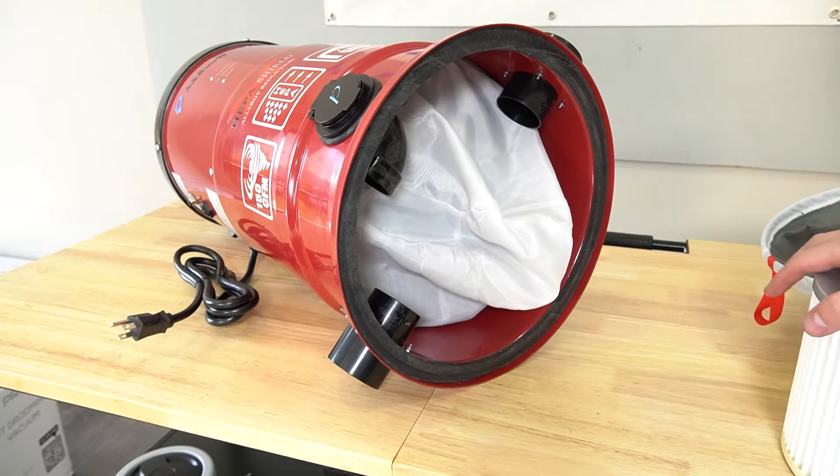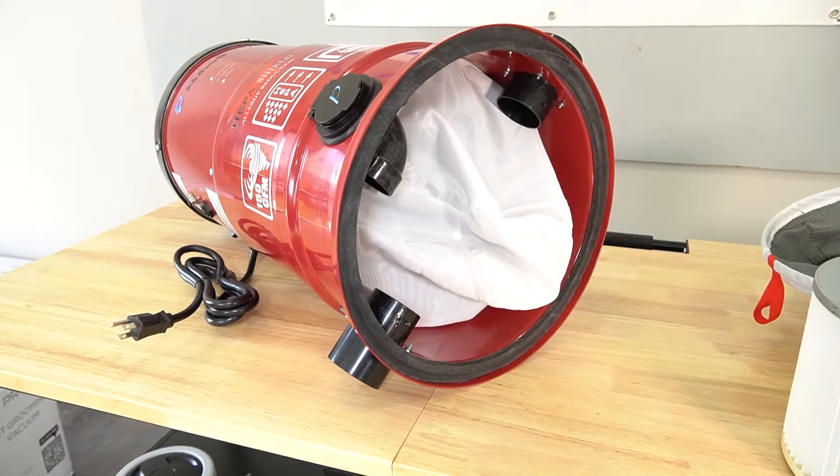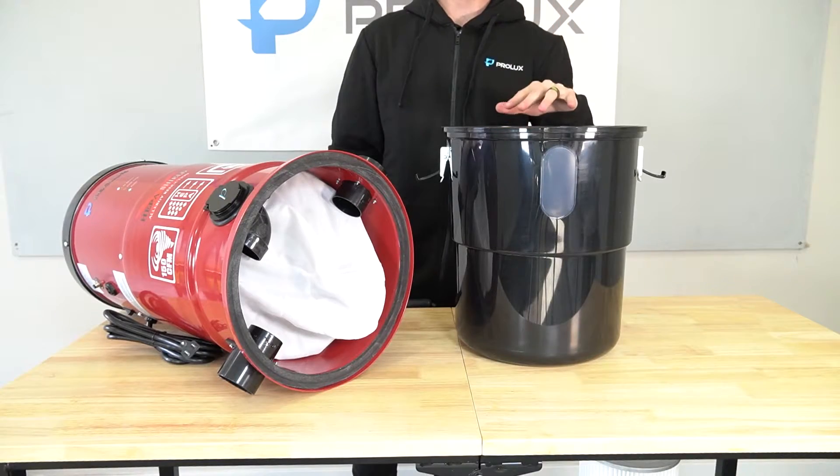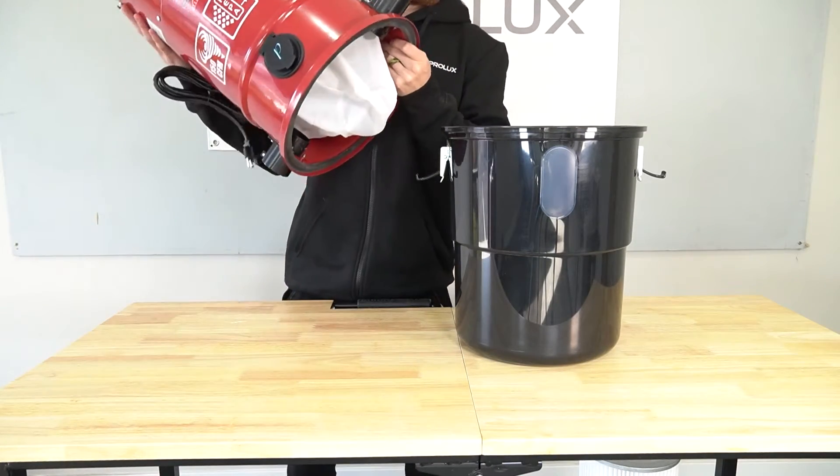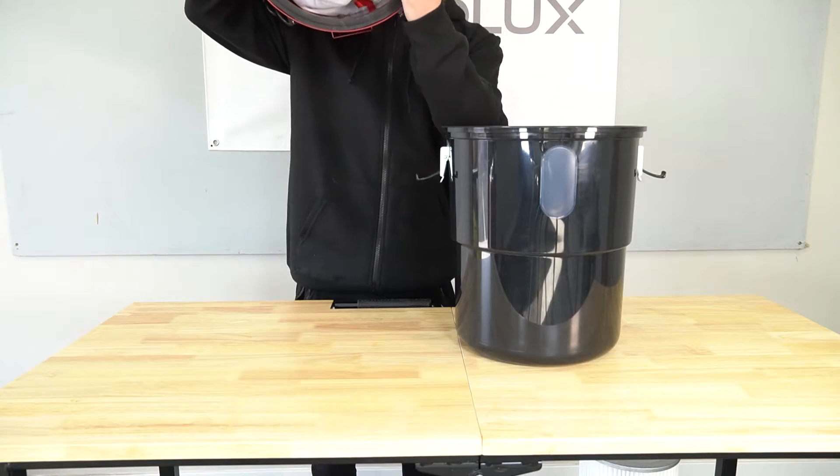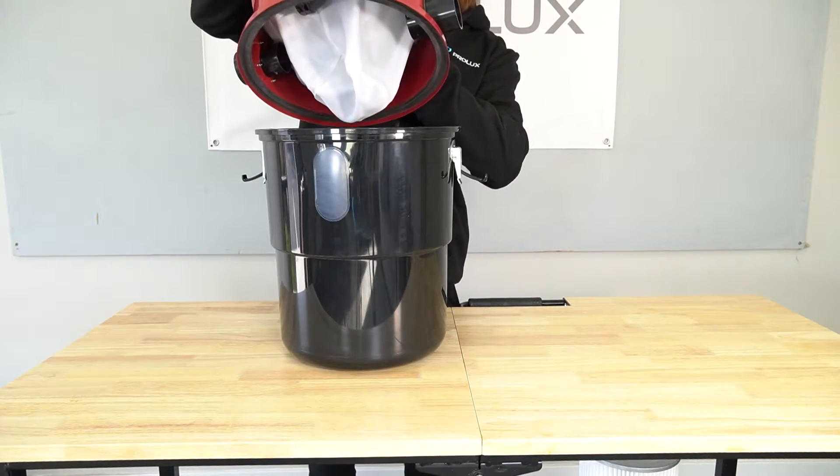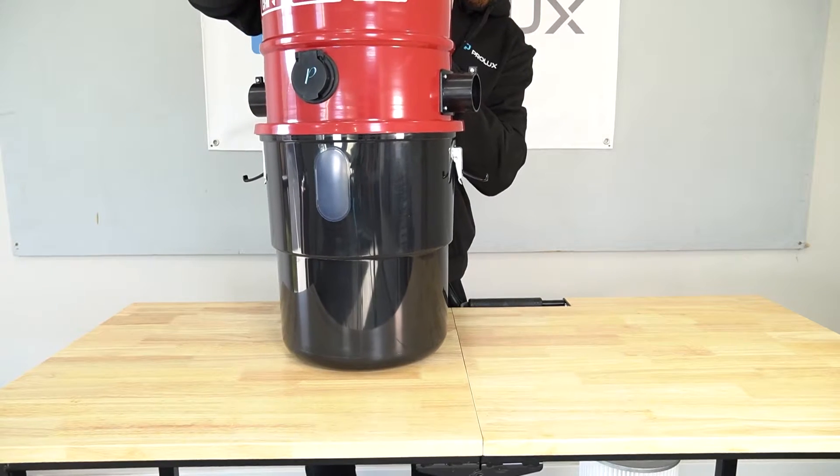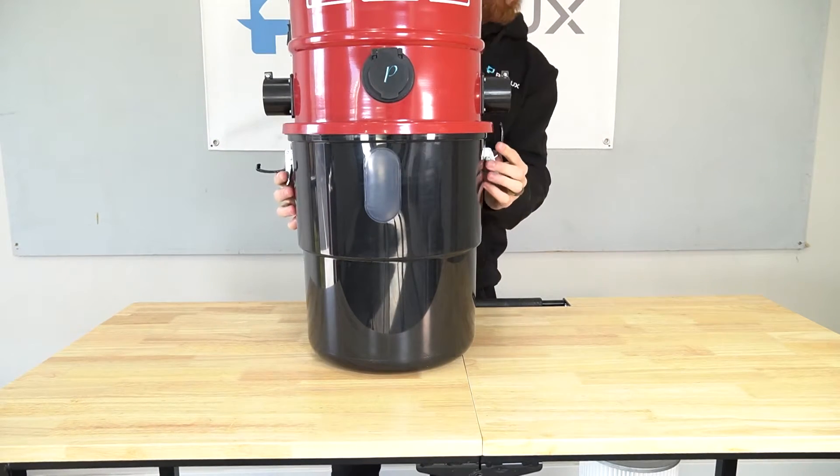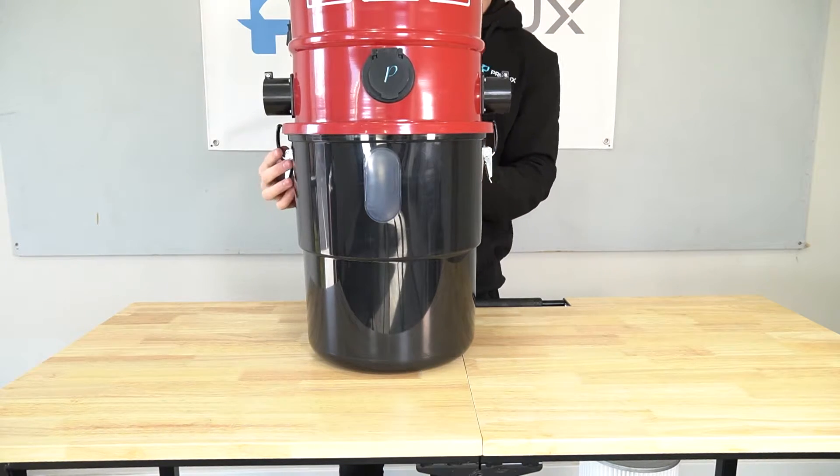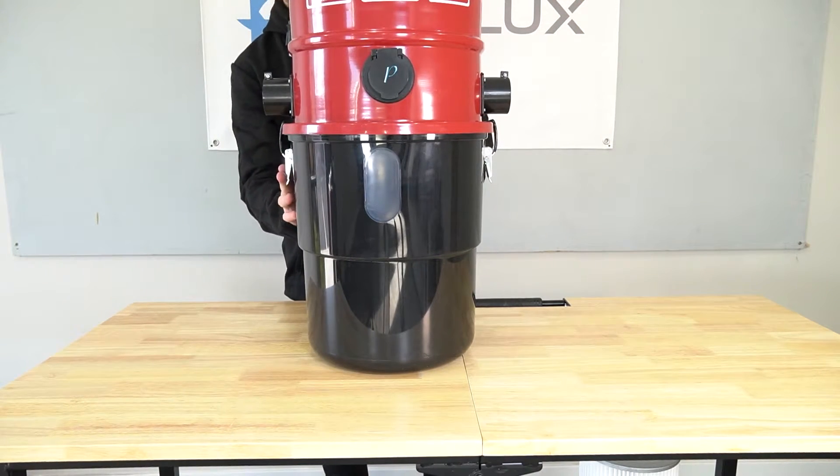Once you have both filters replaced, reattach it to the dirt bin. Grab the dirt bin that you set aside earlier and pick up the vacuum portion. Set it on top of the dirt bin, making sure that it is seated properly. Then latch both the left and right side of the dirt bin to the vacuum.